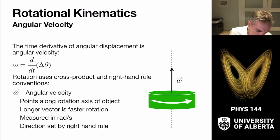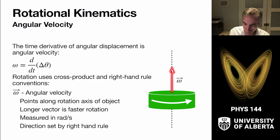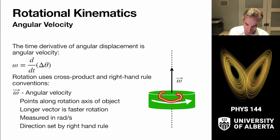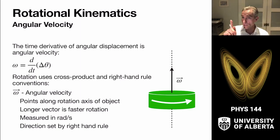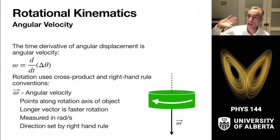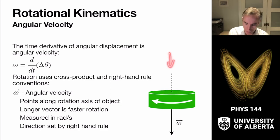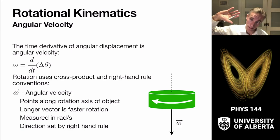The time derivative of the angular displacement gives us omega. The rotational speed is whatever direction it is rotating using the right-hand rule, and we establish an omega vector that points out along the rotational axis. If it's going counterclockwise when viewed from the top, the right-hand rule indicates the vector is pointing upward along the axis. A longer vector means the object is spinning faster. Angular velocity is measured in radians per second.